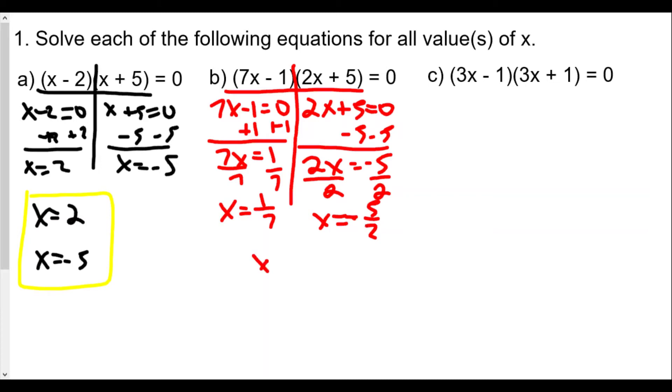And there you go. x equals 1 over 7, x equals negative 5 over 2. The goal is, if we have them already factored, is to set each factor equal to zero. That's why factoring is a pretty big deal here.